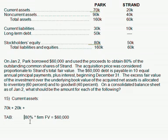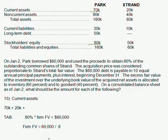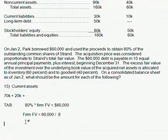Here's the equation we're working with. Algebraically, to solve this little equation, you take your firm fair value equals $60,000 over that 80% of the firm, and then you'll just be given the firm's fair value. Pretty simple — that would come to be $75,000.